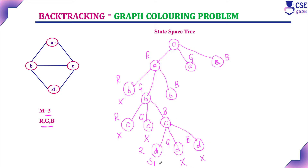Now we got one solution. They have given only three colors, and for each color we have checked the possibility for D. For C, all three colors have been checked at this level, so backtrack to the previous step. For B, red and green have been checked, so backtrack and check the possibility for blue. If I am assigning red to A and blue to B, for C, can I assign red? Already A is assigned with red, so we cannot assign red to C — this is a dead end.